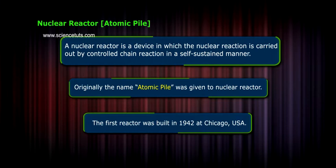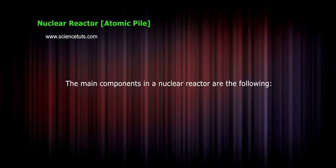The main components in a nuclear reactor are the following: One, fissionable material. The fissionable material are the nuclear fuel used in the nuclear reactions.